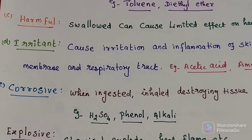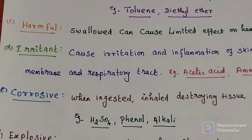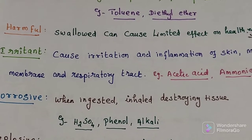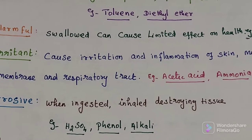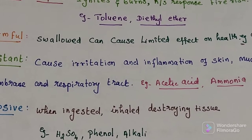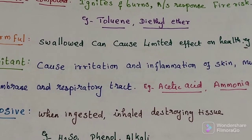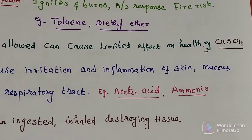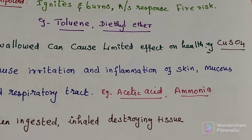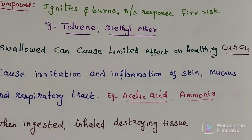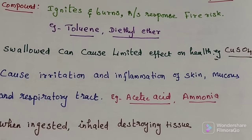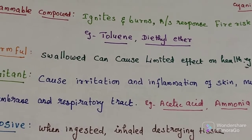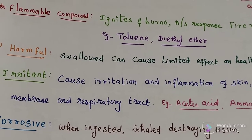The third type is harmful chemicals. A chemical that when swallowed can cause a limited effect on health. When inhaled or absorbed through the skin, it causes harmful effects. Example: copper sulfate.